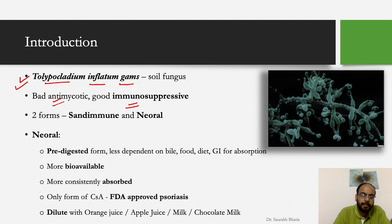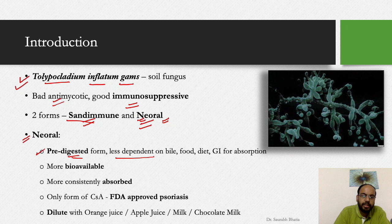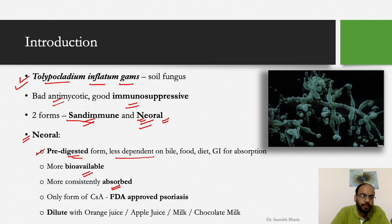Initially cyclosporine was used for psoriatic arthritis and found to be very useful. It has two manufactured forms: Sandimmune, from Sandoz Laboratories in the USA where it was first isolated, and Neoral — the newer oral form. Neoral is a pre-digested form, less dependent on bile, food, diet, or gastrointestinal mucosa for absorption, more bioavailable, more consistently absorbed, and it is the only form of cyclosporine A FDA-approved for psoriasis.